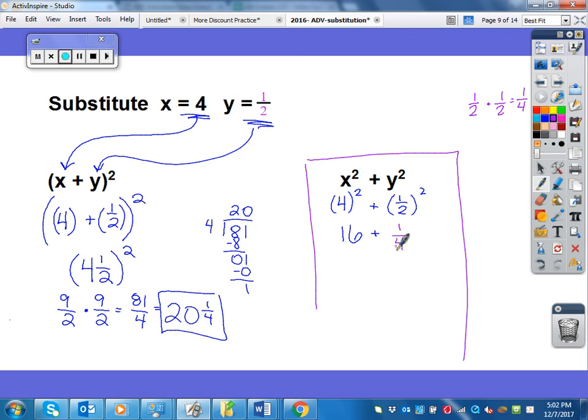Now, I have 16 plus 1 fourth, which is 16 and 1 fourth. So, when you substitute, all you need to do is plug in the values for your variables and they're going to give you those values. You plug them in and definitely use parentheses. Then, solve using order of operations, showing all of your steps.